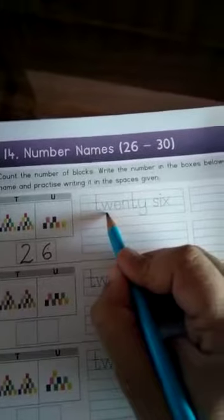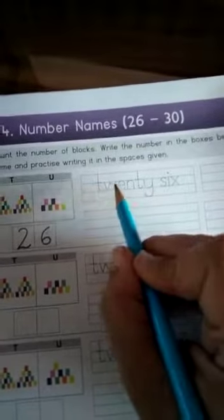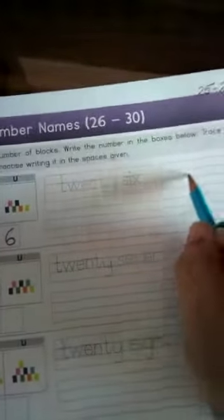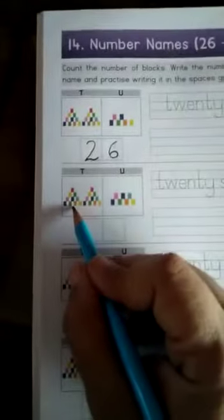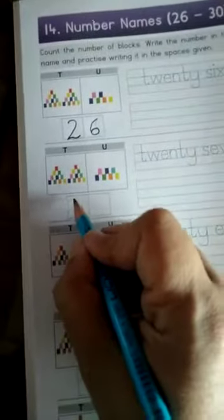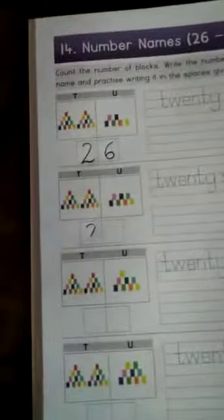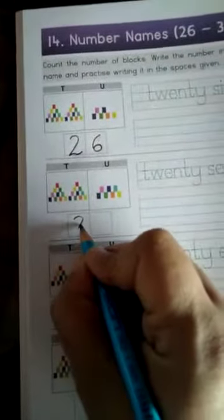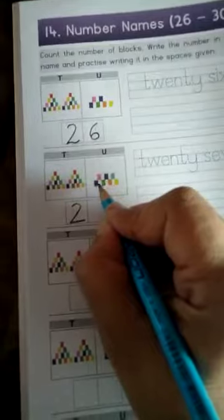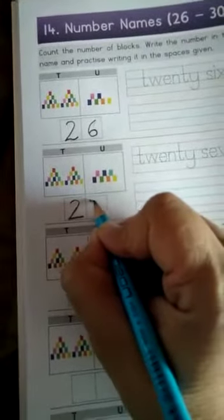So first you trace this number 26 and then write down in the boxes. Now next, 1 ten, 2 tens. 2 tens means 20 and 1, 2, 3, 4, 5, 6, 7 means 27.